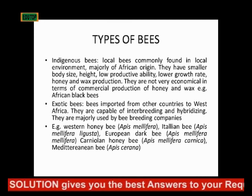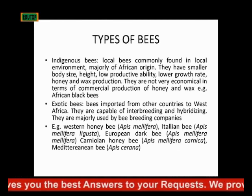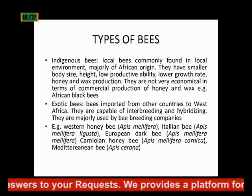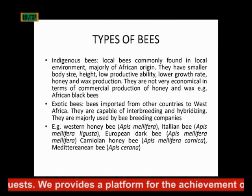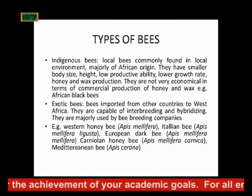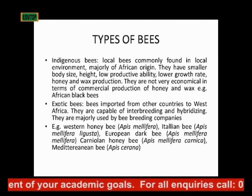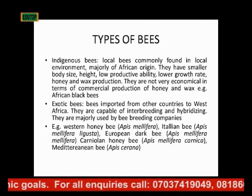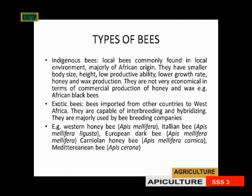The second kind of bee is the exotic bee. These are bees imported from other countries into West Africa. They are capable of interbreeding and hybridizing and are mainly used by bee breeding companies for commercial purposes. Examples include the western honey bee (Apis mellifera), the Italian bee, the European dark bee, the Carniolan bee (Apis mellifera carnica), and the Mediterranean bee (Apis cerana).